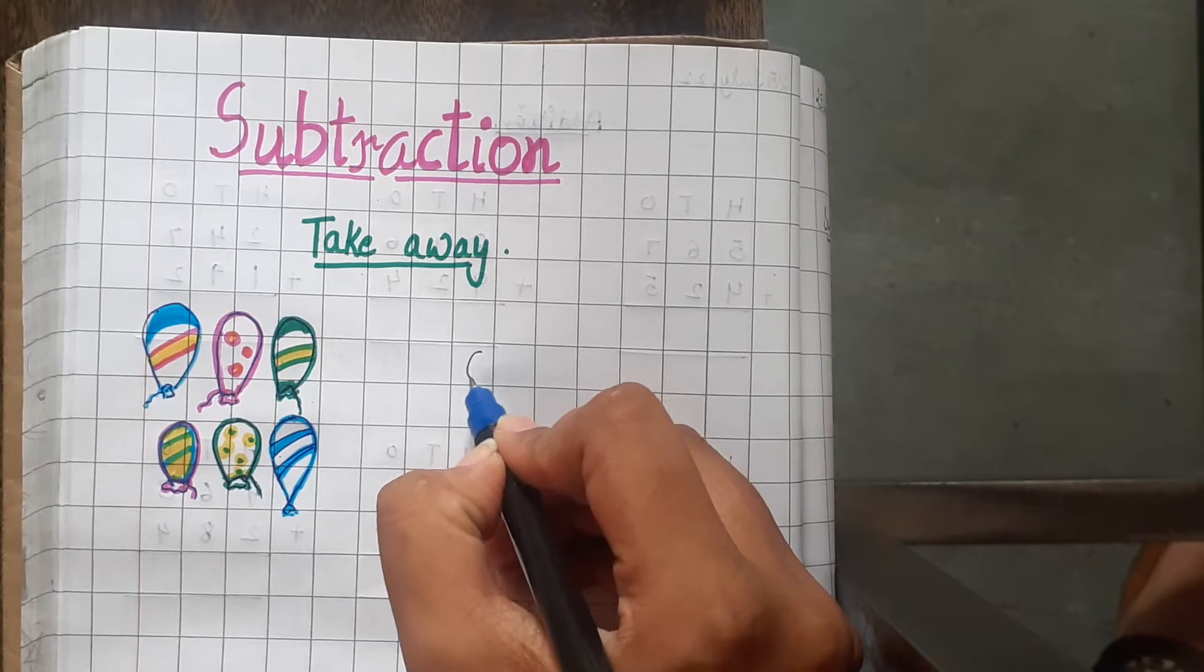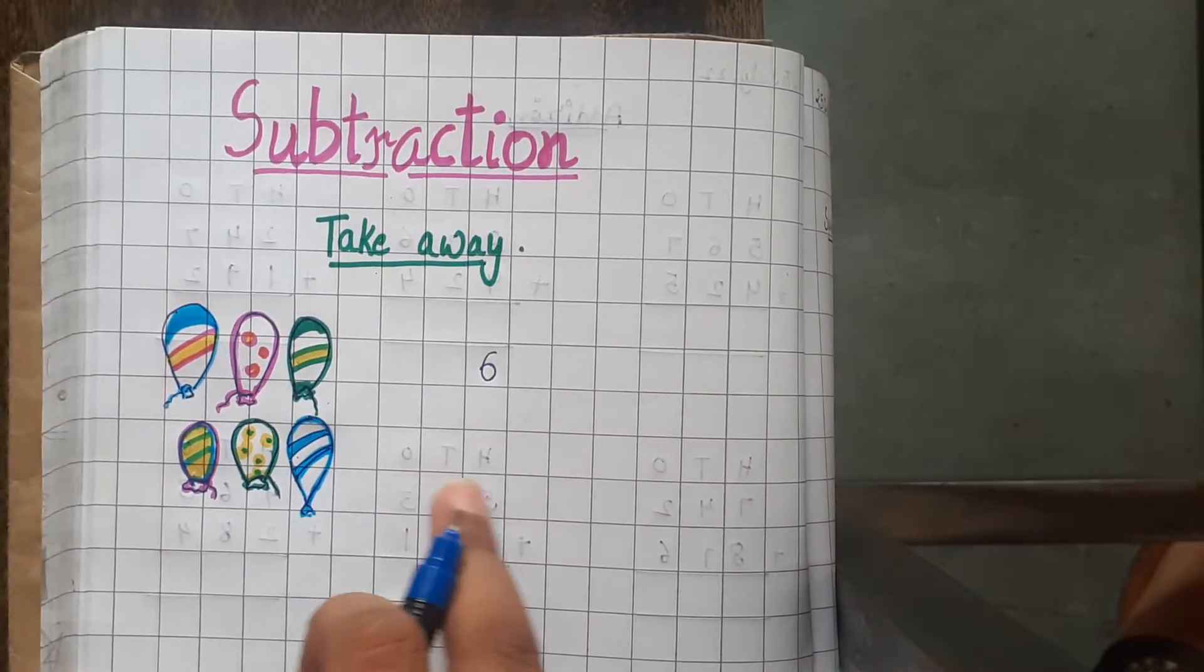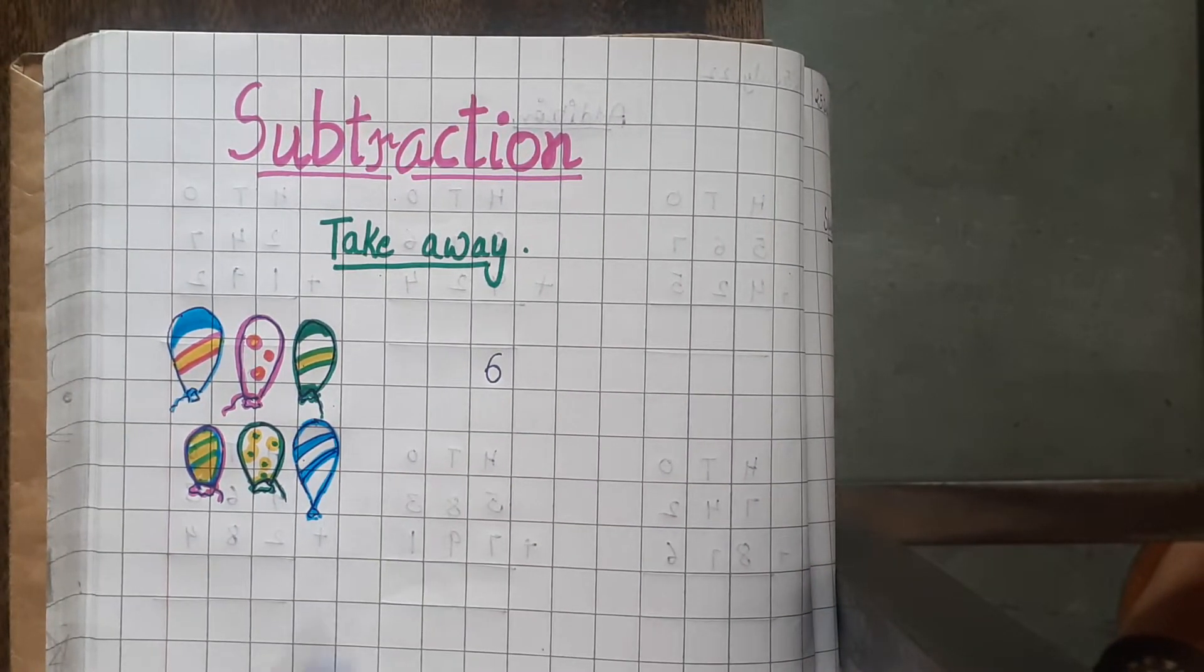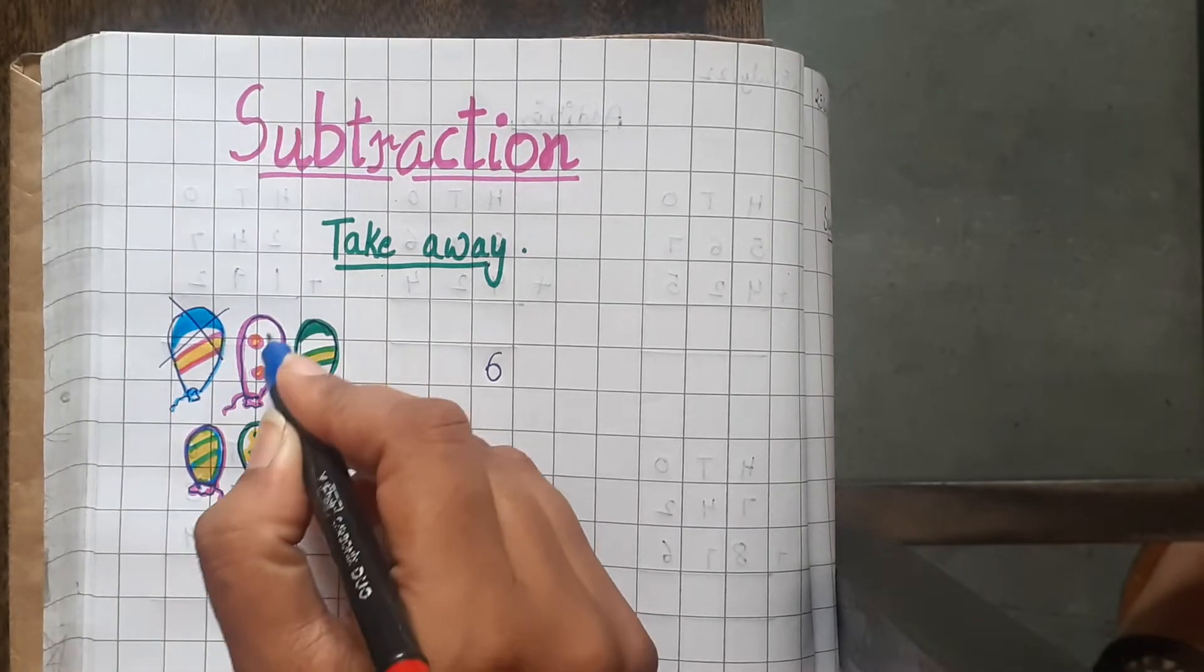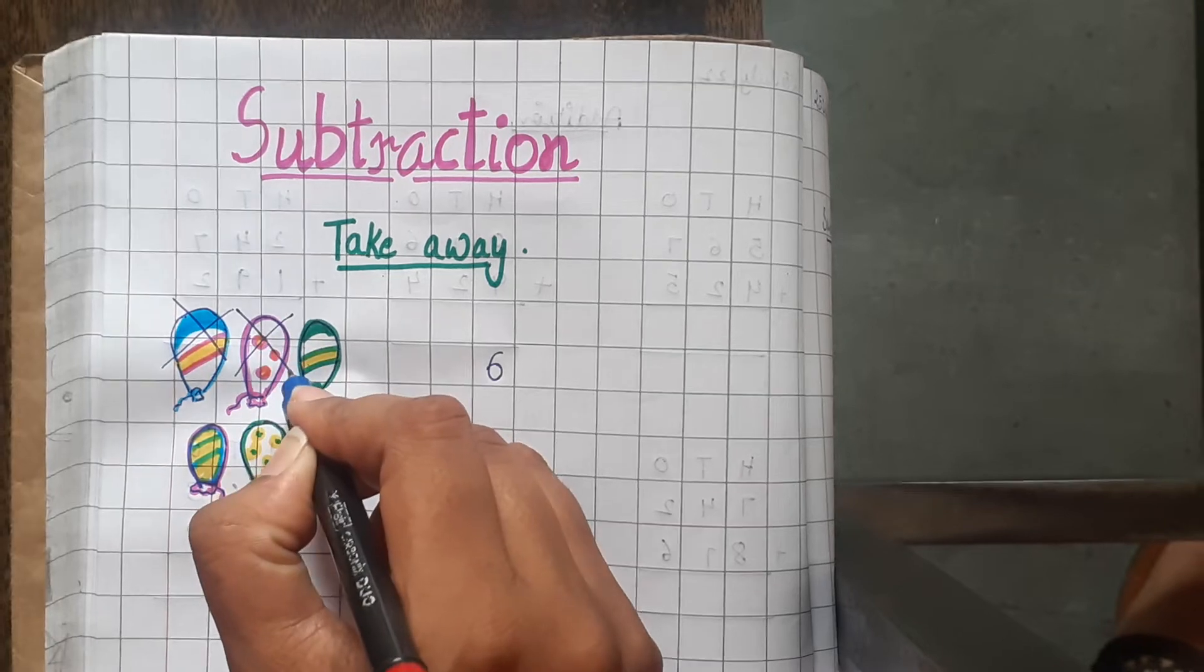Let me write here 6. There are 6 balloons and out of these, 2 are pricked by a pin.